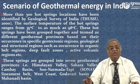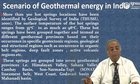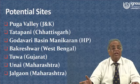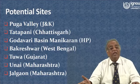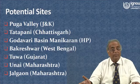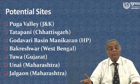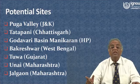The 7 geothermal provinces in India are: Himalayan valley, Shahara valley, Kambi basin, Shon Narmada Tappi, West Ghat, West Coast, Godavari basin, and Mahanadi basin. The potential sites include Puga valley in Jammu and Kashmir, Tattapani in Chhattisgarh, Godavari basin, Manikaran in Himachal Pradesh — which is near Kullu Manali and already has hot springs — Bokkesar in West Bengal, Tuwa in Gujarat, and Unai and Jalgaon in Maharashtra.